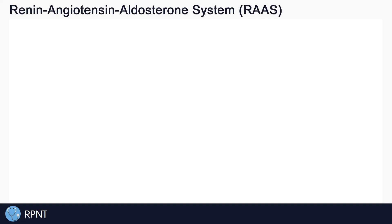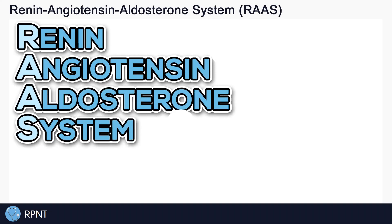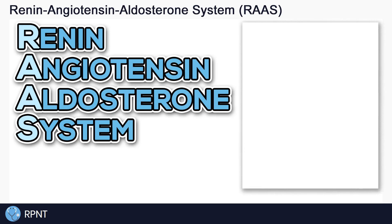Hi everyone, this is Ryan from RPNT.ca, and in this video I'm going to explain the renin-angiotensin-aldosterone system, or RAAS for short. This is a topic you'll come across a lot in nursing school, especially in pharmacology and pathophysiology. Why the system is so important is because it helps to regulate blood pressure and fluid and electrolyte balance. We'll start with a quick overview of what the RAAS does, and then we'll get into exactly how it works.